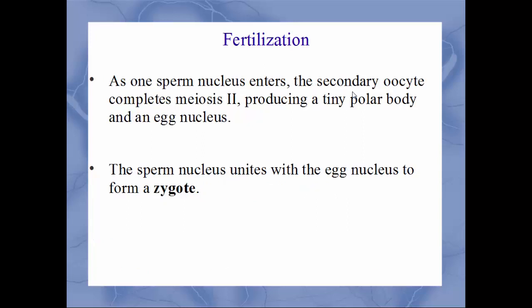Once that one sperm cell enters the egg and you have fertilization, the oocyte will harden and form an envelope around the outer ring so no other sperm cells can get in. As that sperm nucleus enters, the secondary oocyte will complete meiosis II, producing a tiny polar body and an egg nucleus. This union of the sperm nucleus and egg nucleus is where you have the zygote — one single-celled structure, the zygote. This is how we all start off in life.